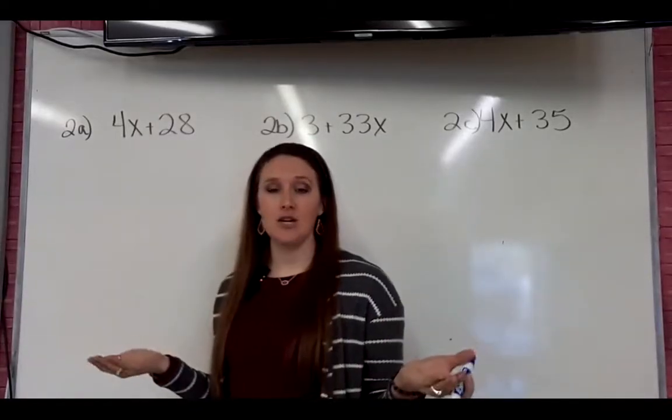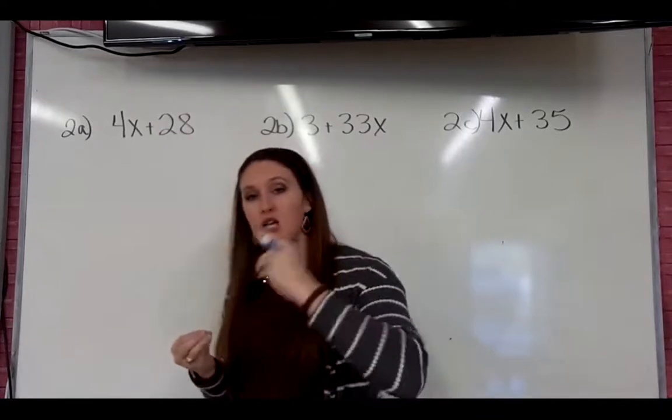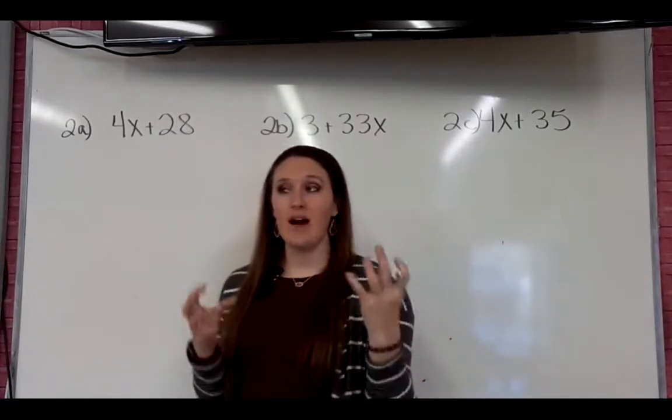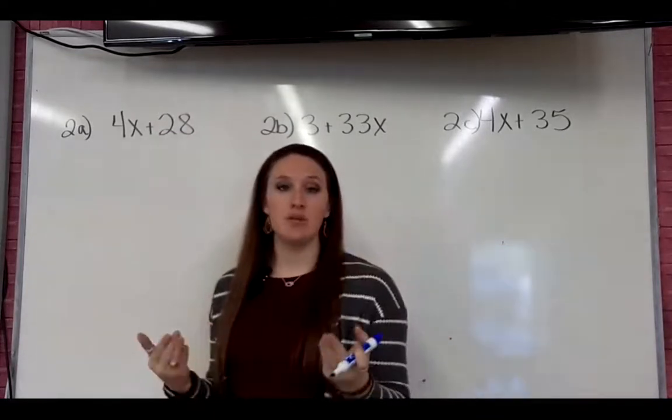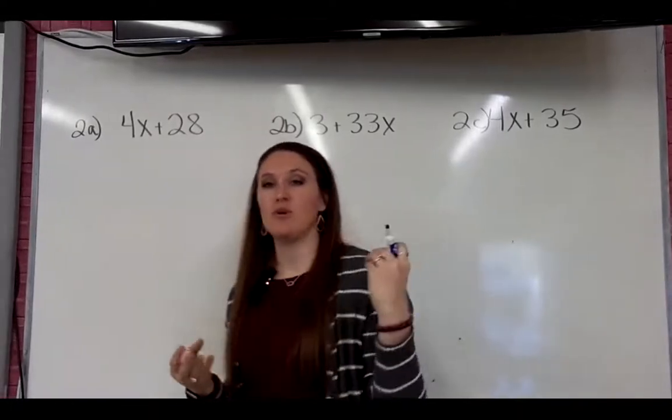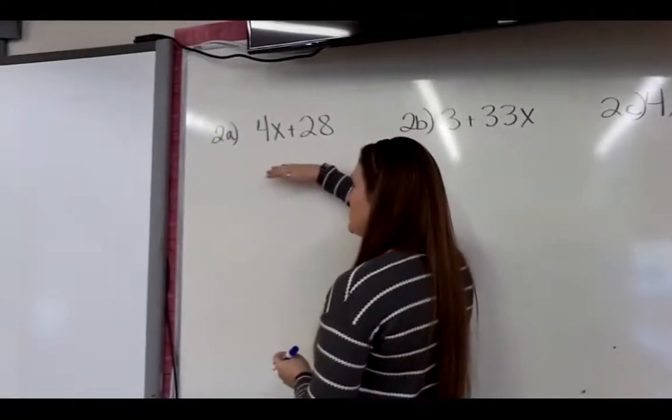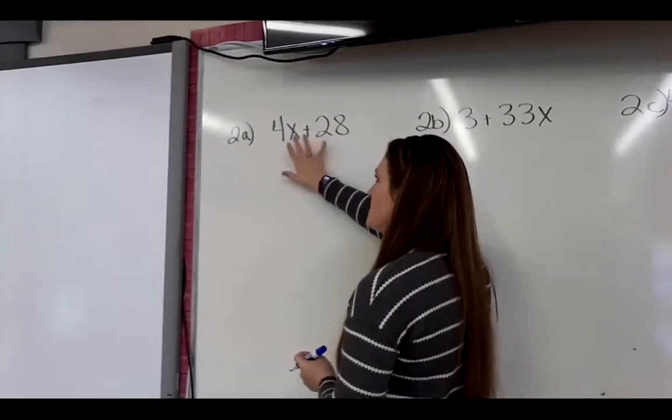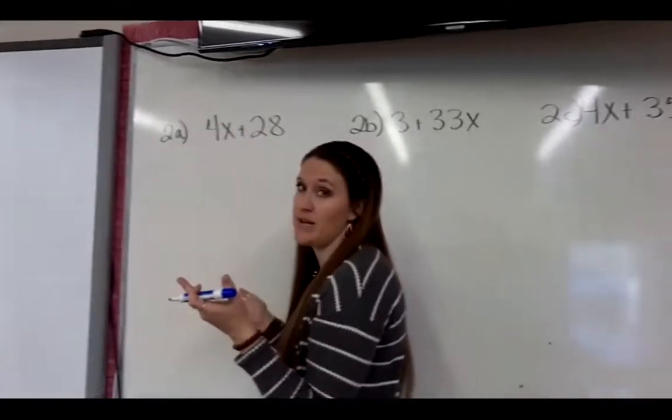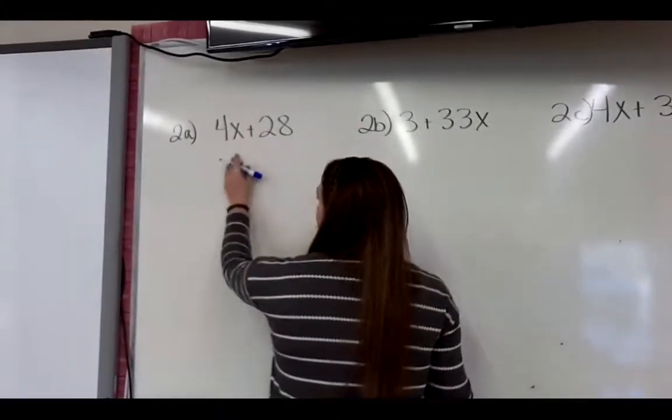Okay, on these problems we are now factoring. If you remember, that means we are undoing the distributive property. We're finding the GCF, or the greatest common number they both have, and we're pulling it out of both of those numbers. So 4x plus 28, okay, this one has an x, this one does not. So x is not our commonality. So I find a number that they both have. They both have a 2 because they're even, but we've got to find the greatest number they both have, the greatest common factor.